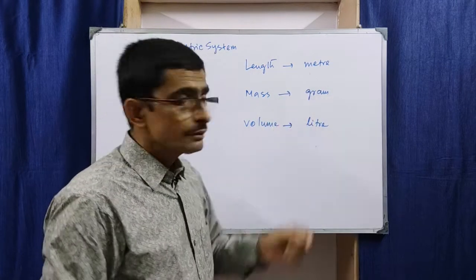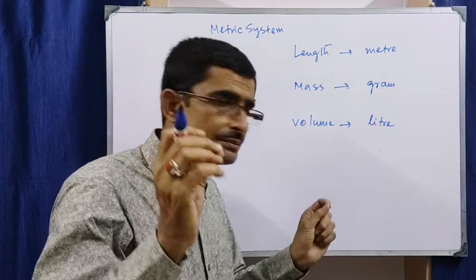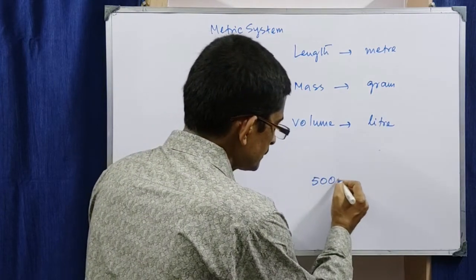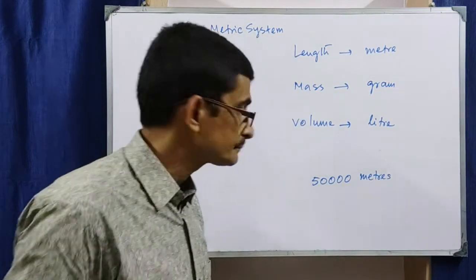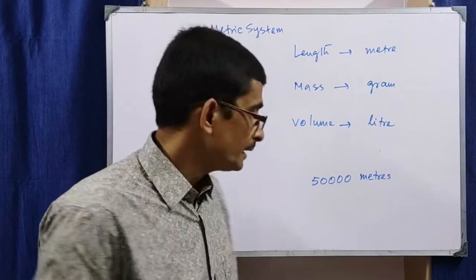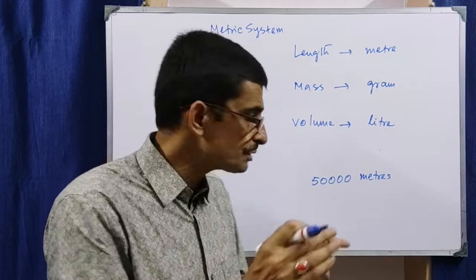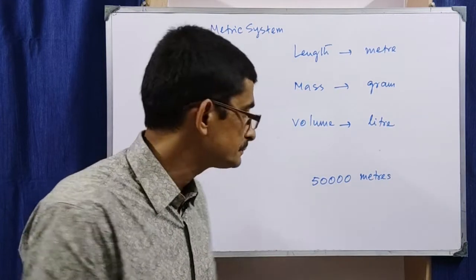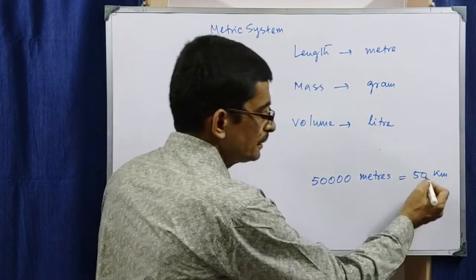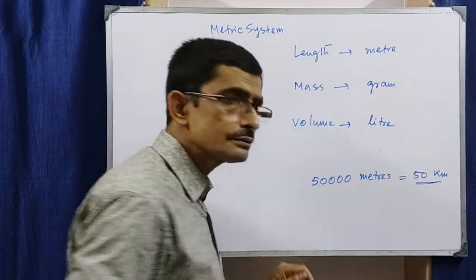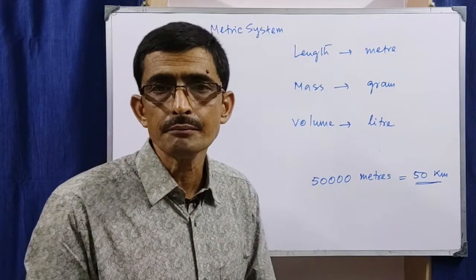If we talk about length — for example, the distance between two cities expressed as 50,000 meters — would you remember that every time? Is it possible to write 50,000 meters everywhere? But if you write 50 kilometers, it is quite easy to remember. It is a small number and takes less space.